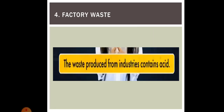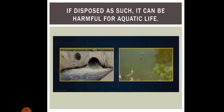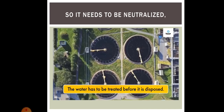Fourth is factory waste. The waste produced from industries or factories contains acids. If such acids are disposed as such, it can be very harmful for aquatic life — it can kill the animals and plants present in the water. So factory wastes need to be neutralized first; the water has to be treated before it is disposed. Only after neutralization is such water from factories sent into water bodies.